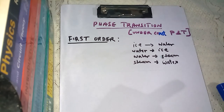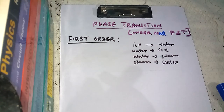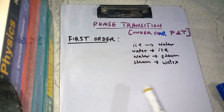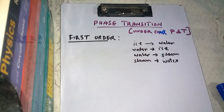What are second order phase transitions? They are transitions in which no heat energy is absorbed or liberated during the process. Those are called second order phase transitions. We will see them later.